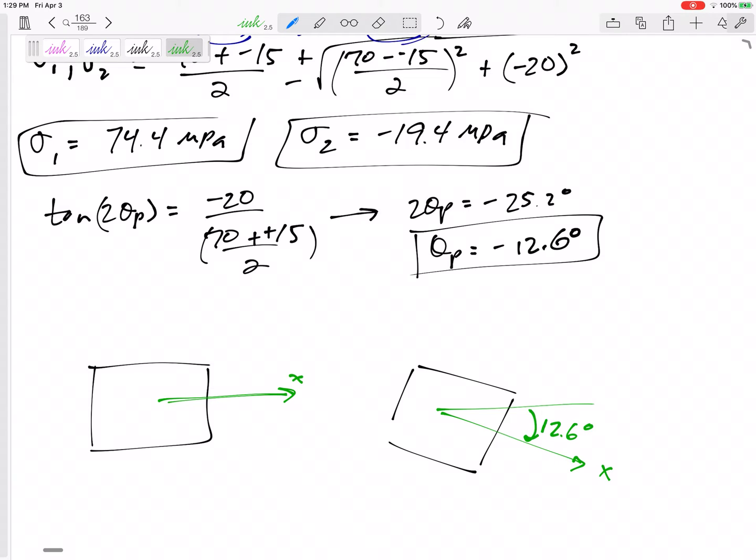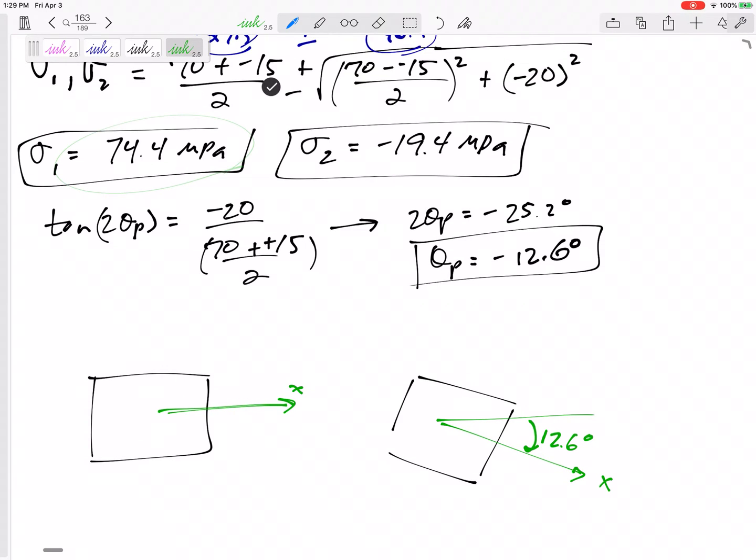Alright, now I need to put positive 74.4 on one of these faces, but I'm not sure if I need to put the 74.4—maybe this is it, 74.4 right here, and maybe 19.4 right there. But it might be the other way. Alright, if I want you to sketch it, then I want you to make sure these are on the correct faces.